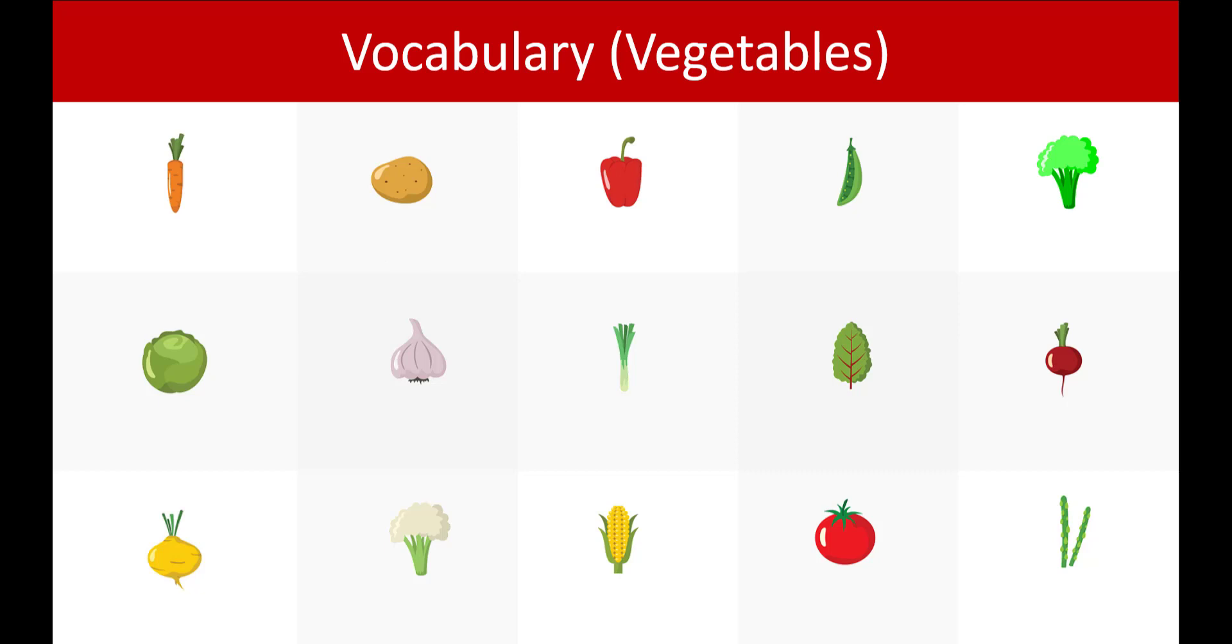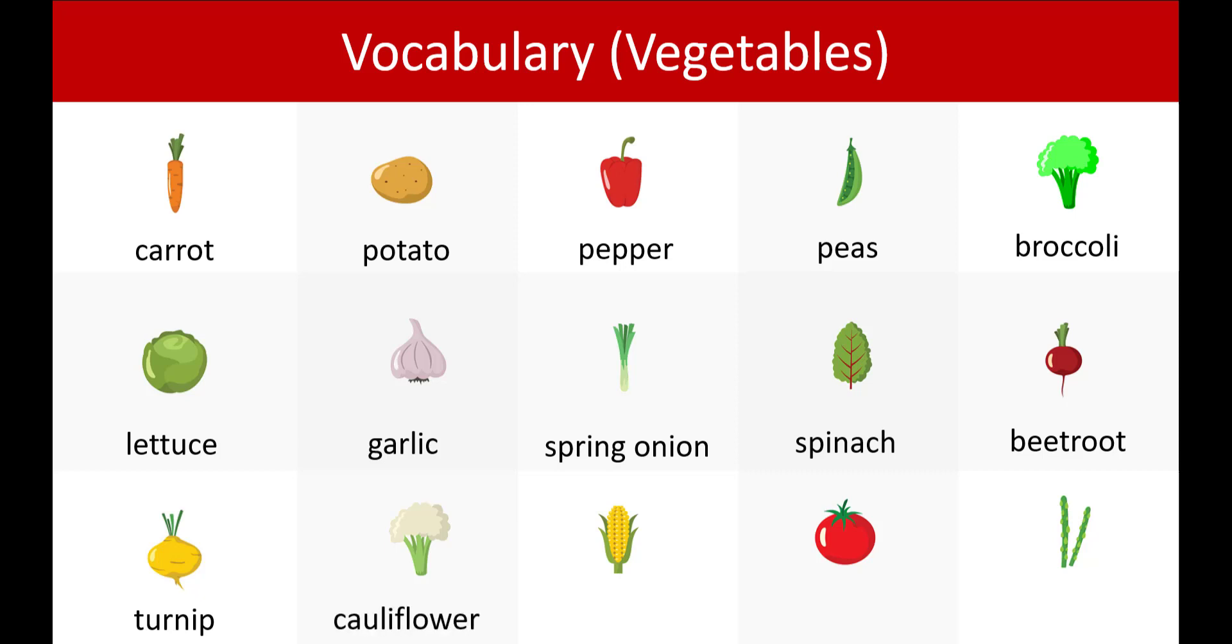Let's go through them again. Carrot, potato, pepper, peas, broccoli, lettuce, garlic, spring onion, spinach, beetroot, turnip, cauliflower, corn, tomato, asparagus.